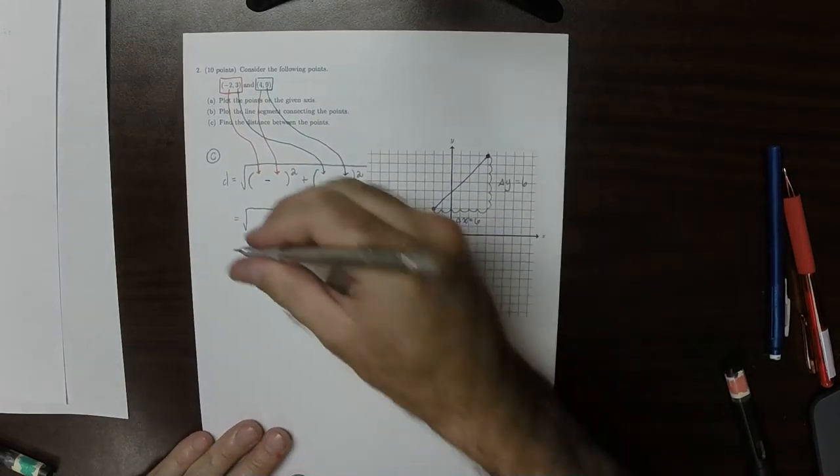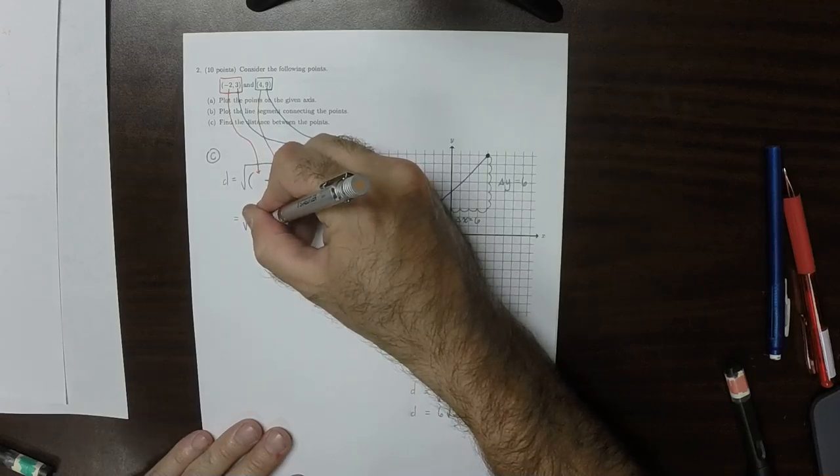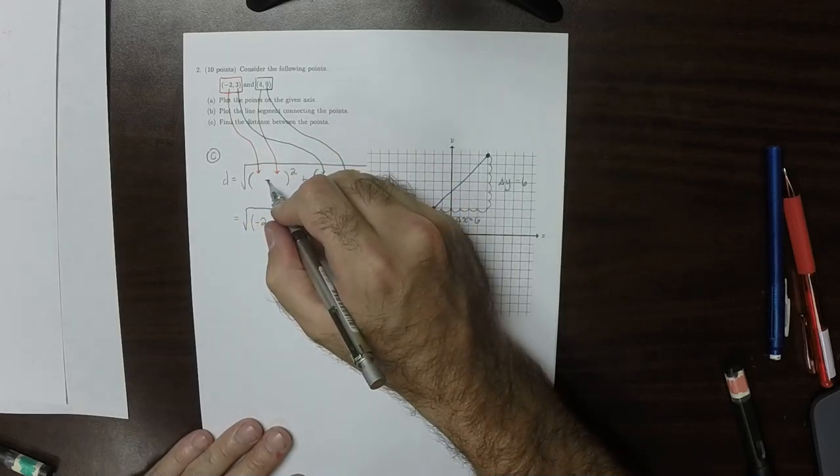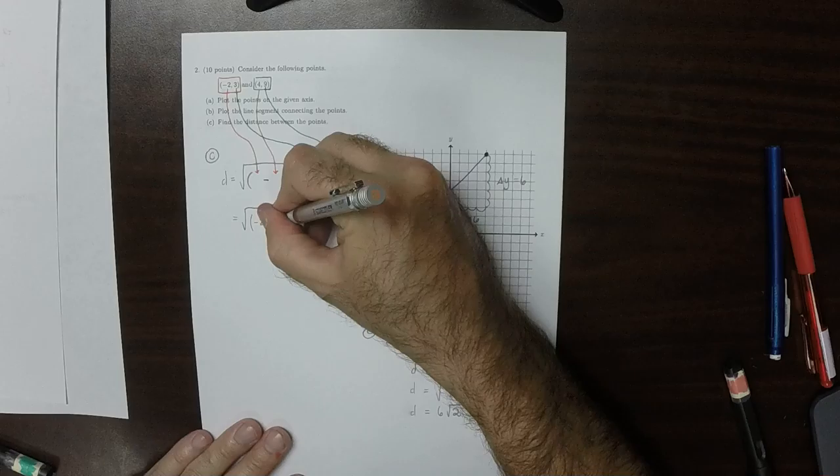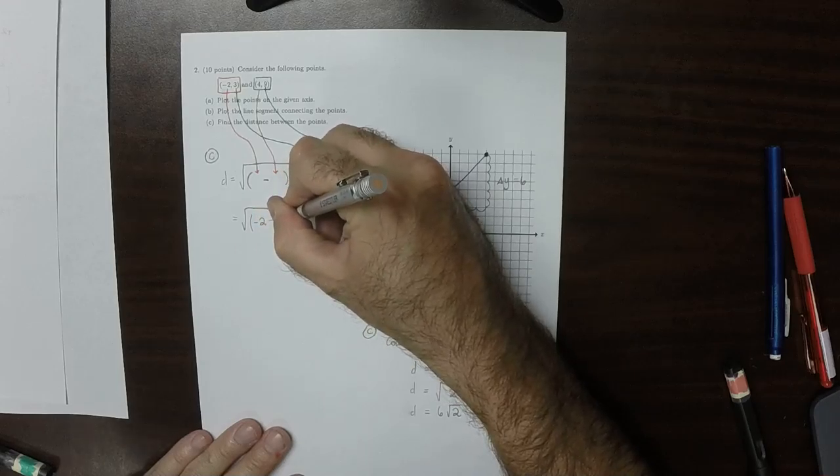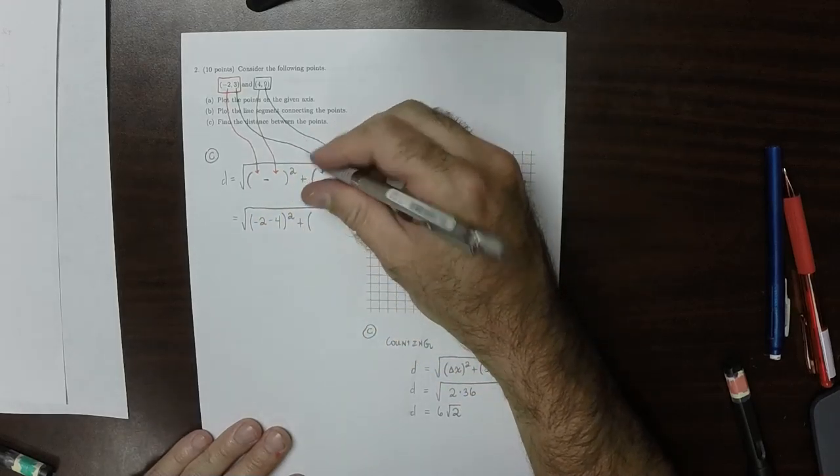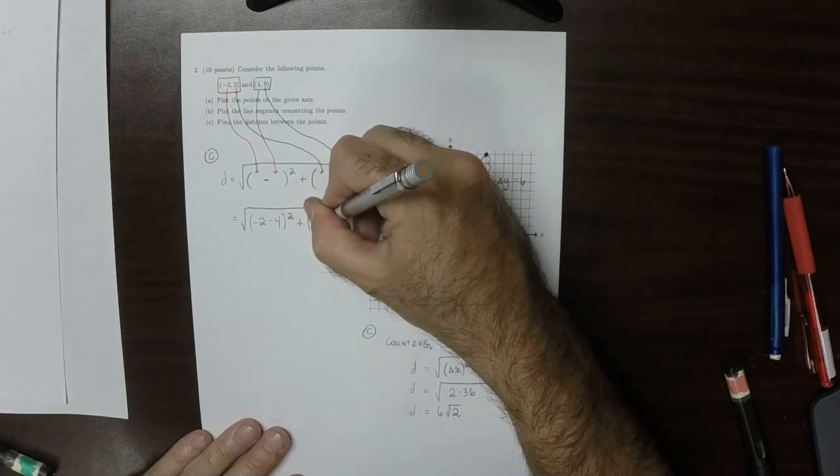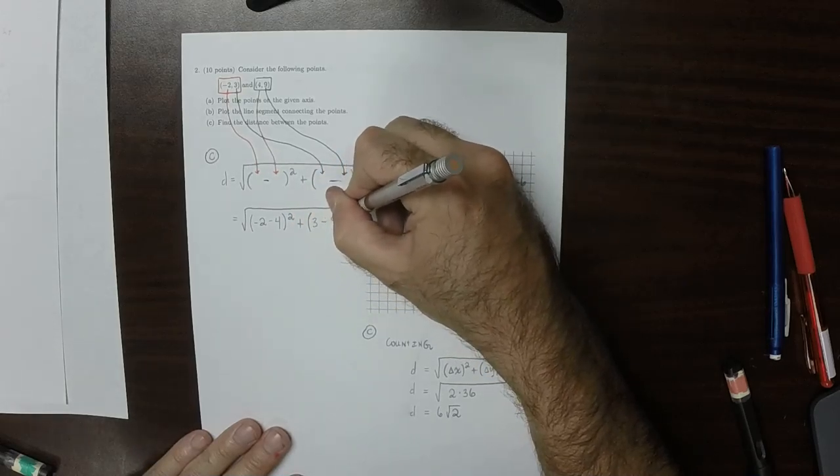So that would be square root of, OK, so that would be negative 2 and then minus 4. Square that. And then plus, that would be 3 minus 9. Square that.